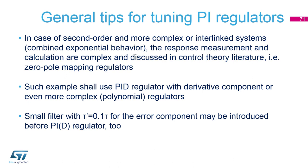If our system exhibits second-order or more complex or even interlinked behavior with combined exponential responses, the measurement and calculation is too complex and is discussed in control theory literature — for example, zero-pole mapping regulators. Such examples use a PI regulator with a derivative component or more complex polynomial regulators. It is beneficial to use a small filter with tau equal to 10% of the main tau time constant for the error component introduced before the PI regulator.